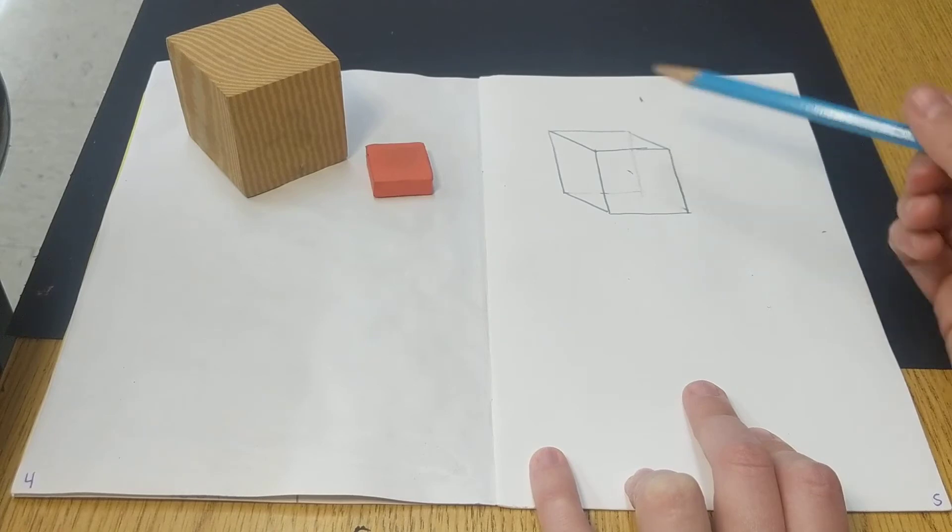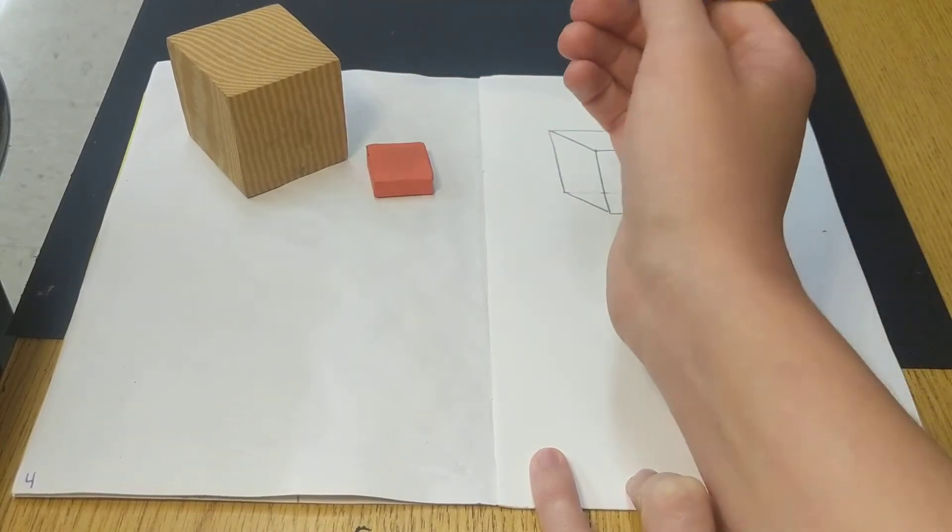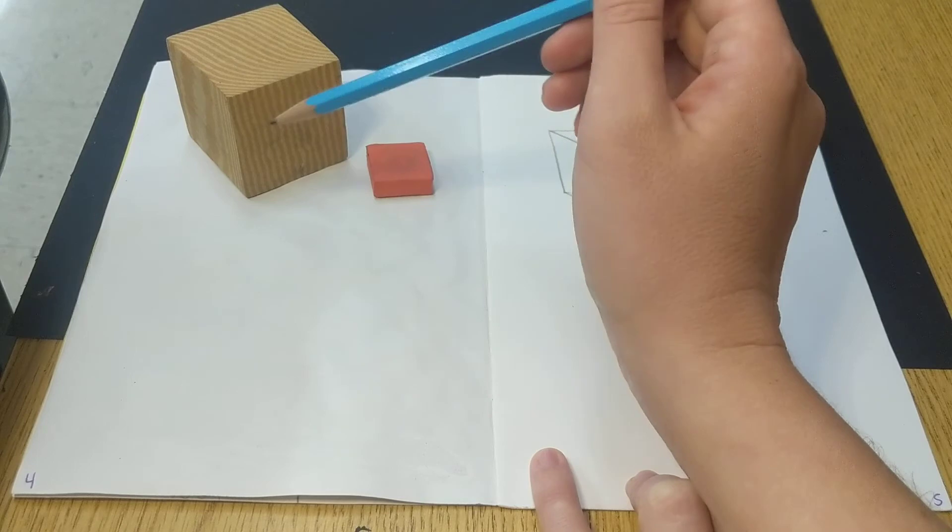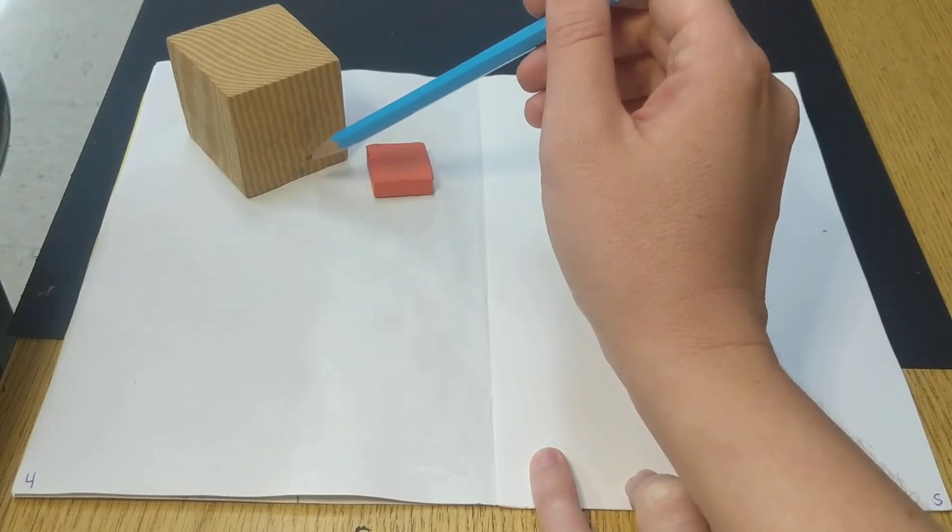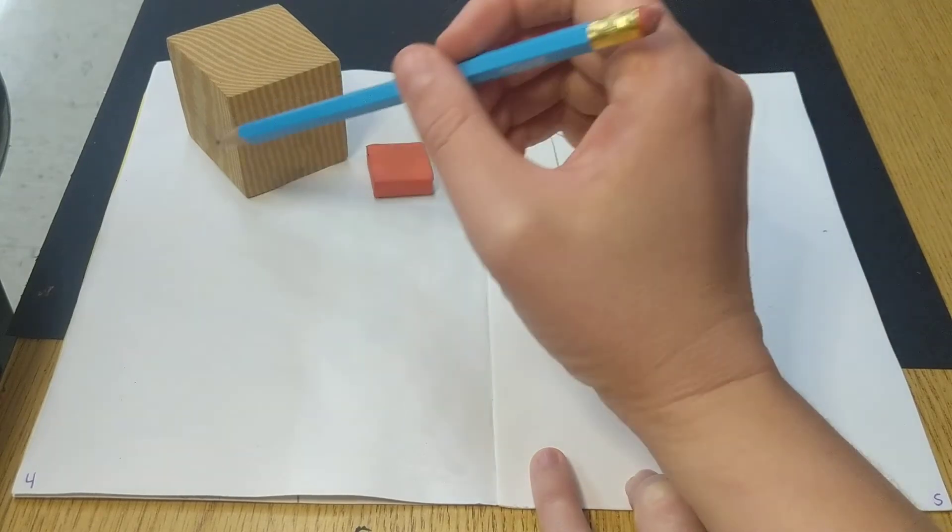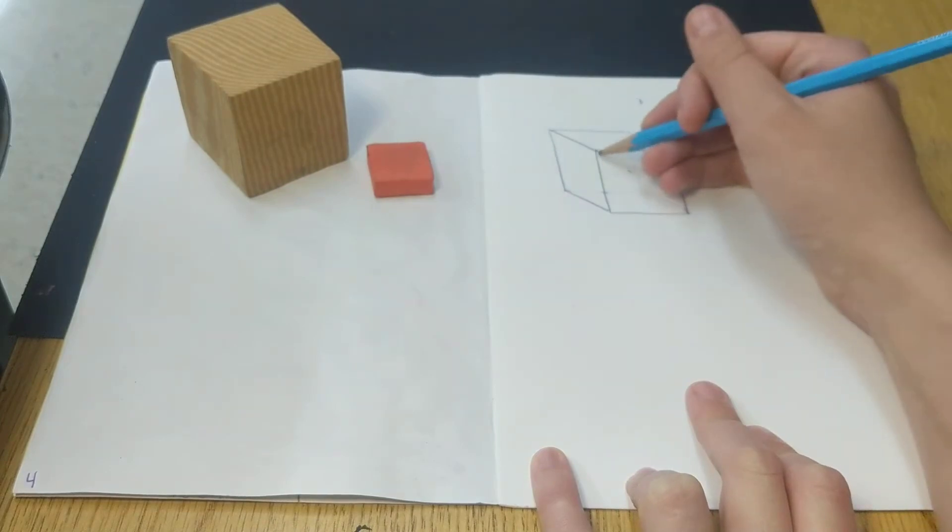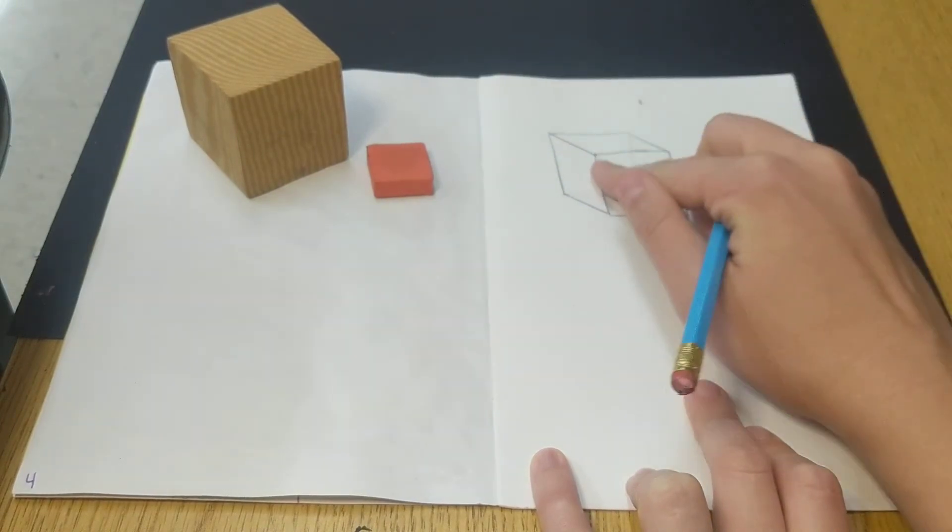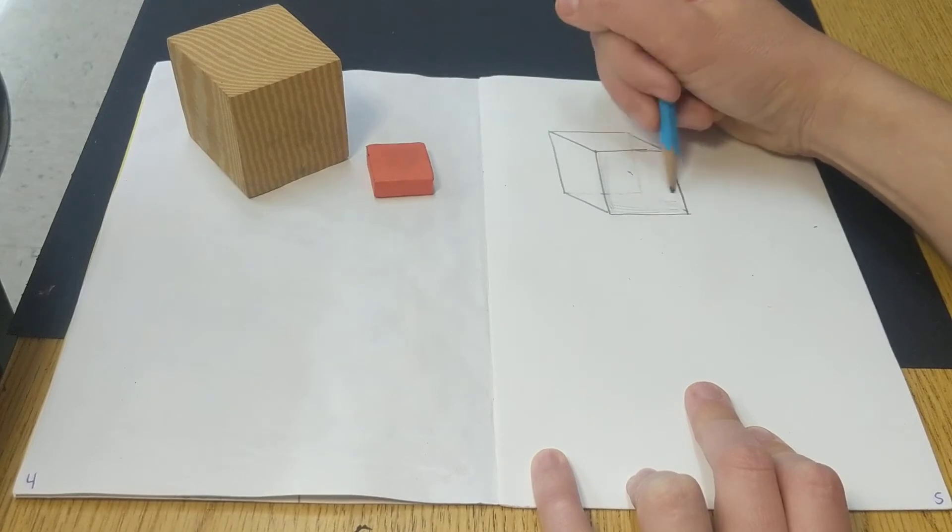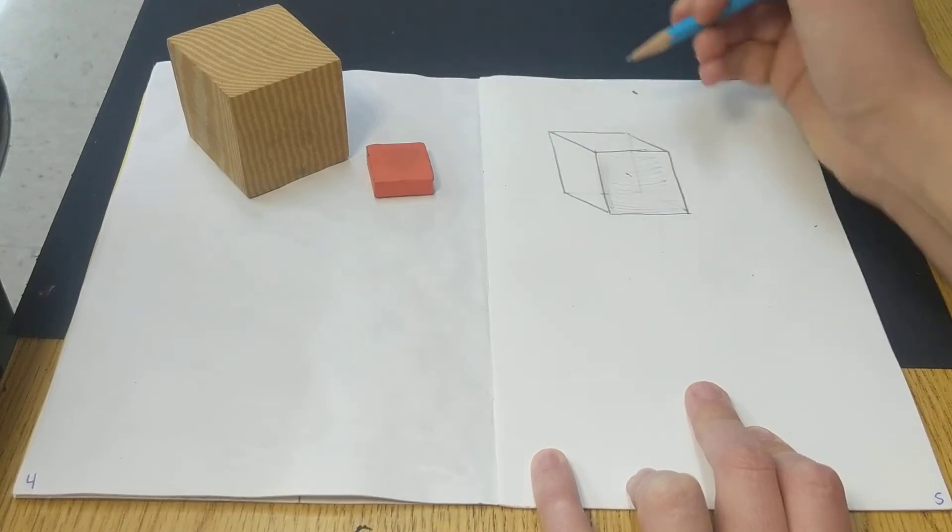Now I want you to also notice on the cube, see how the top is lighter because the light is hitting it. And this space is darker. It has more shadow. Even this side is a little bit darker too. So that's something you can do to show the 3Dness of it all is add shadows.